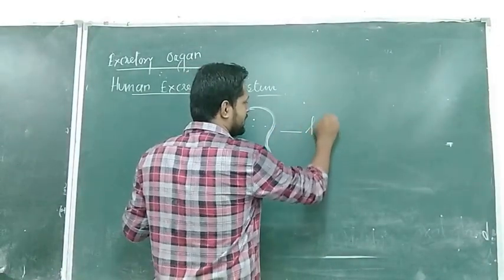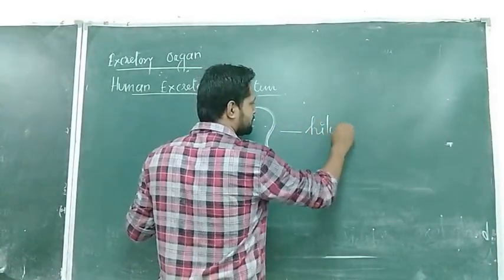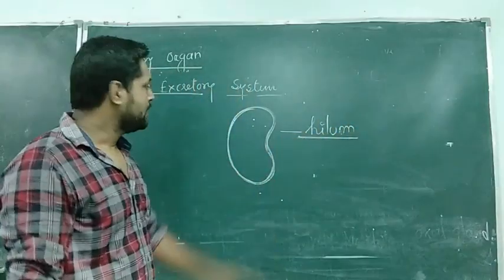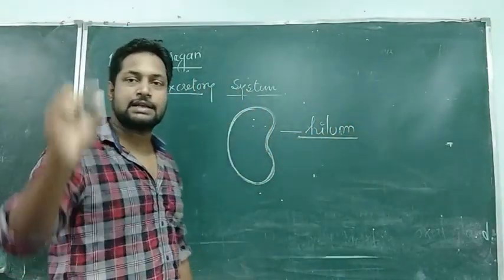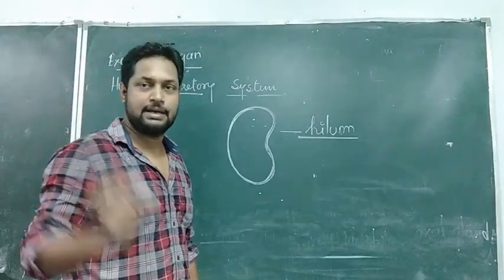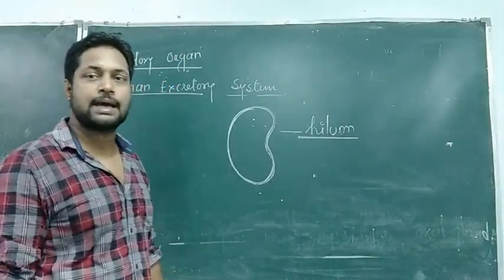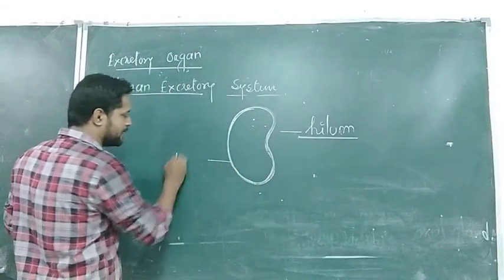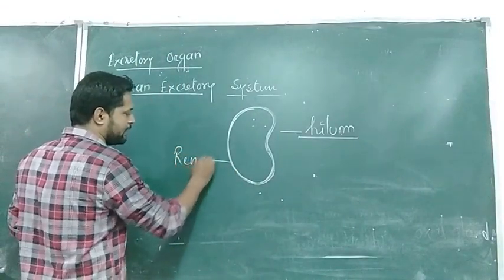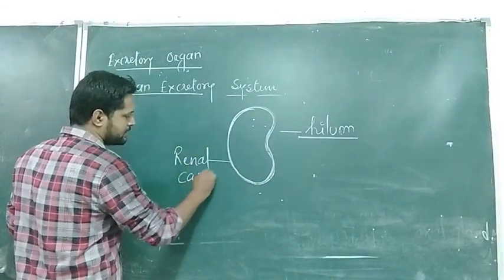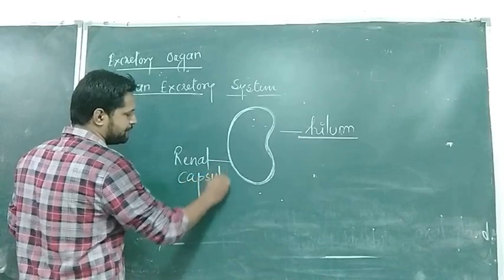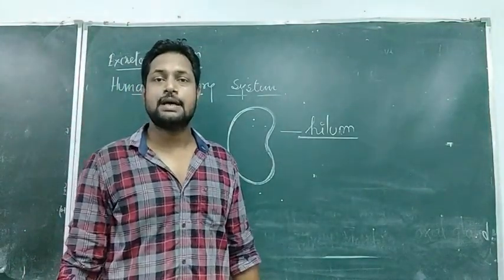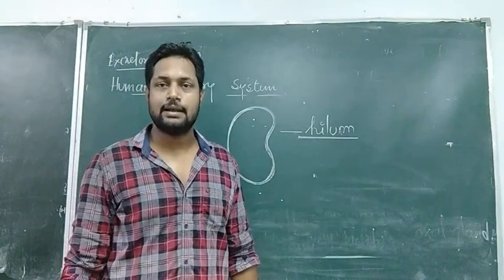The concave inner side of the kidney is called the hilum — H-I-L-U-M. The kidney is covered by a thin membrane called the renal capsule — R-E-N-A-L capsule. Renal means kidney.